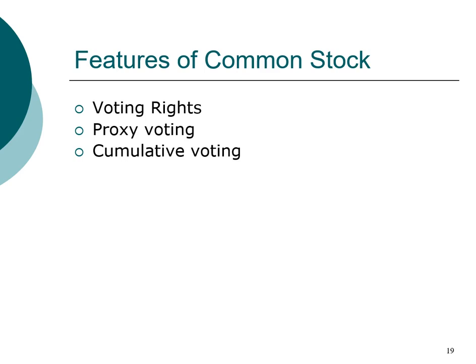With cumulative voting, it allows a shareholder to cast all their votes on a single candidate. For example, if there are two seats open on the board of directors and you own 800 shares of a company with cumulative voting, you'll receive 200 votes and you can cast the entire 200 votes to a single candidate. Without cumulative voting, you get one vote per open seat.